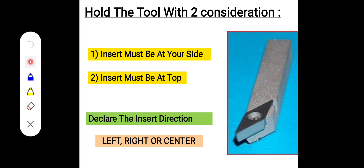Now we can say this tool is left-hand or right-hand. If the insert came at the left direction, then it is known as a left-hand tool. If the insert came at the neutral position — at the center — then the tool is known as a neutral tool. This example is a left-hand tool because the insert came at the left side.